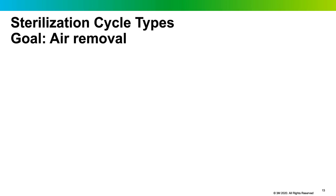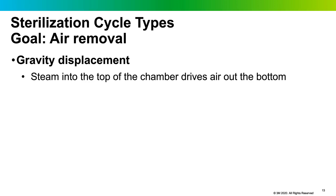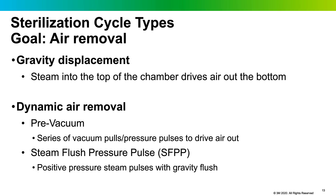All methods of steam sterilization have a way to remove air from the chamber and load items during the conditioning phase. Sterilizers may have multiple types of air removal. In a gravity cycle, steam is pumped into the top of the chamber, driving air out through the drain. Dynamic air removal is an umbrella term that includes pre-vacuum sterilizers — where a series of vacuum pulls and pressure pulses very effectively remove air — and steam flush pressure pulse chambers, which use positive steam pulses and gravity flushes but never pull below atmospheric pressure.